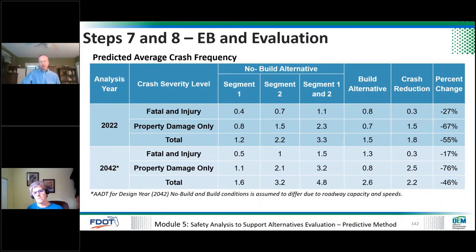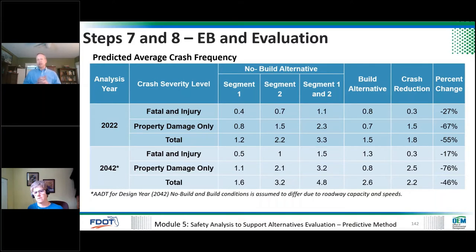These numbers are based on distributions, so the word 'approximately' probably needs to be applied. You could round percentages and report, for example, we think crashes will go down by 25 to 30% for fatal-injury and 65 to 70% for PDO — put some rounding and ranges on these numbers. There's regularly discussion among researchers at TRB about providing standard errors to these equations, just like there are with CMFs, so we can talk about that range. At some level, when the numbers are substantial enough, you can draw conclusions — it appears to be a decrease, not an increase.